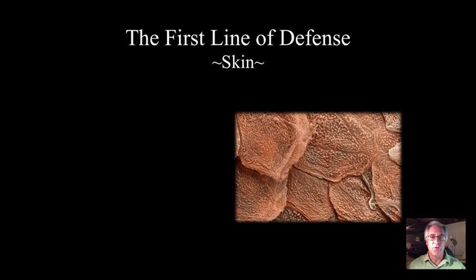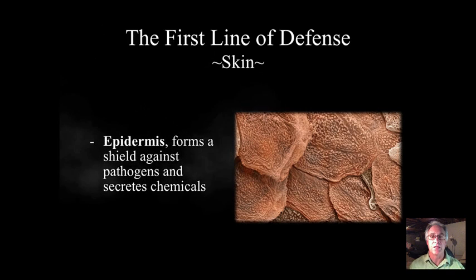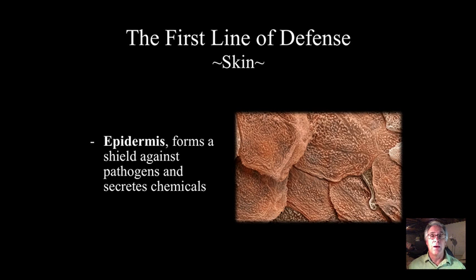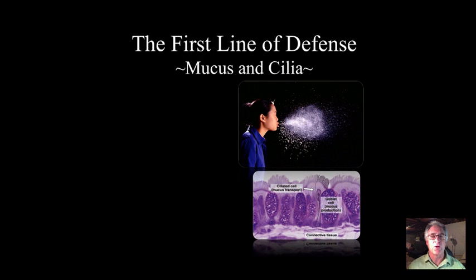There are three lines of defense. We're going to primarily focus on the second and the third one, but it needs to be said that the first line of defense is our skin. Outside of being dead tissue and providing a tough barrier because of the way those dead cells are structured, there's also a low pH and a chemical called lysozymes, and the sebaceous oils that are there make it very difficult for pathogens to get in. But when they do, we go to our second line of defense.